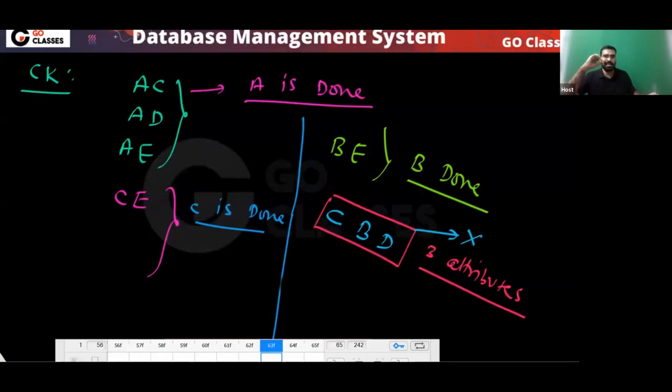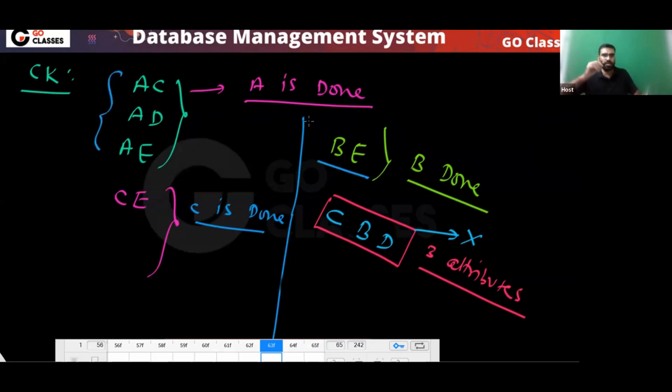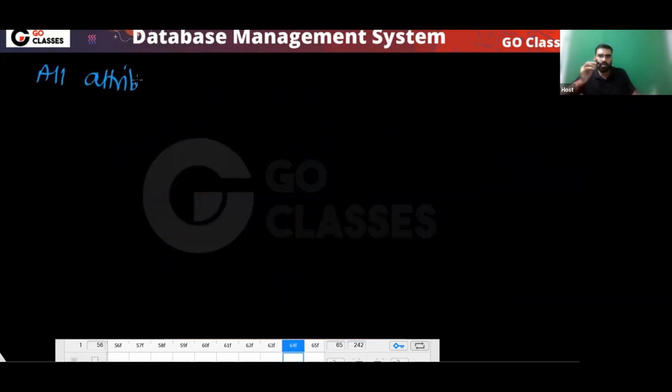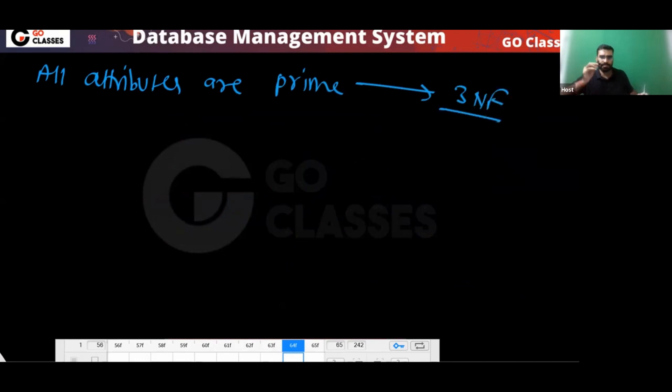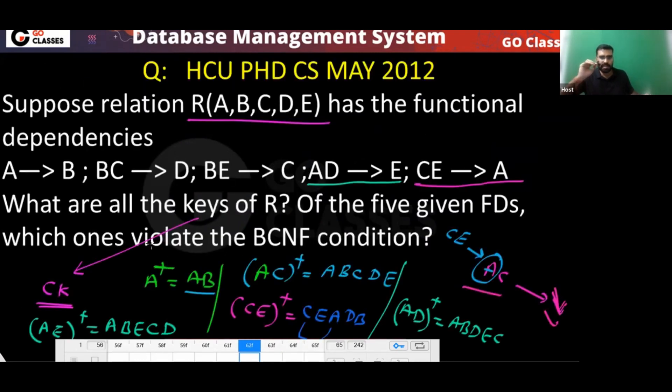An important observation: since all attributes appear in some candidate key, there are no non-prime attributes — all attributes are prime. When all attributes are prime, the relation is automatically in Third Normal Form (3NF). However, for BCNF: A determining B — A is not a super key, so this violates BCNF. Therefore the relation is in 3NF but not in BCNF.